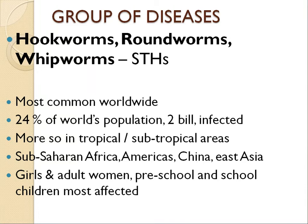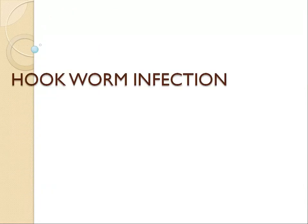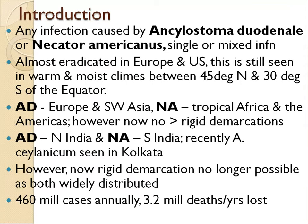Worm infections are prevalent in sub-Saharan Africa, South Americas, China, East Asia, and of course India. Girls and adult women, preschool and school children are the most vulnerable — they work barefoot or are neglected, making them most affected. We come to hookworm: any infection caused by Ankylostoma duodenale or Necator americanus, single or mixed infection, is called hookworm infection. It is almost eradicated in advanced Europe and the US but still seen in warm and moist climates between 45 degrees north and 30 degrees south of the equator.